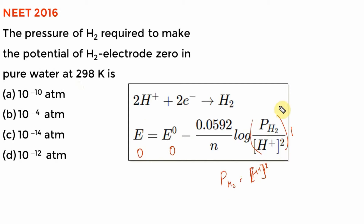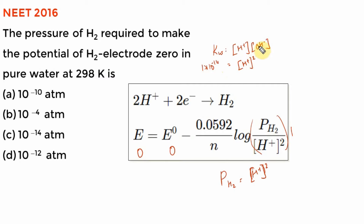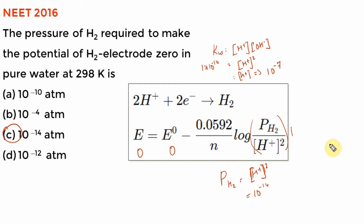Again, this problem is extremely simple once you set it up. It is easier once you understand what they are asking. Electrochemistry is tough when you study it, but once you get comfortable the questions are always two or three steps to calculate.